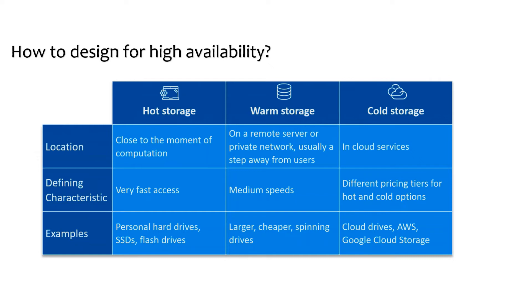Hot storage is data that is accessed frequently — it could be data actively used by employees and customers, and it needs to be stored on fast storage so it can be accessed quickly. Warm storage is data accessed less frequently, such as data used for reporting or analytics purposes. It doesn't need to be accessed as quickly as hot data, so it can be stored on slightly slower, capacity-optimized storage.